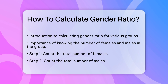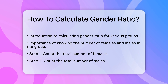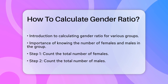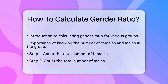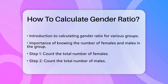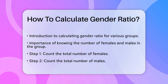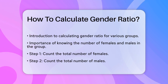First, you need to know the number of females and males in the group. For example, if you're calculating the gender ratio in a company, you would count the number of female employees and the number of male employees. Once you have these numbers, you can use a simple formula to calculate the gender ratio.